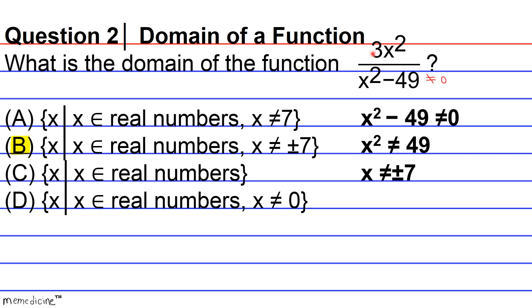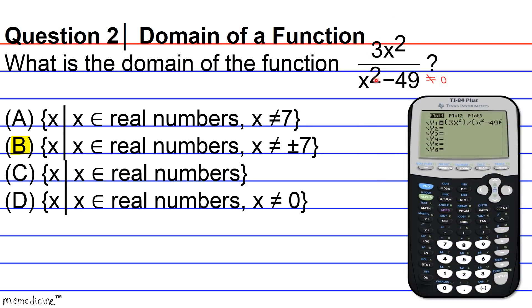So we're going to go ahead and input the function into our graphing calculator. So we open up our y equals equation editor, and we input the function. 3x squared, our numerator, our fraction bar, which is found through division, and we input the denominator, x squared, you know, our x squared feature over here, minus 49.